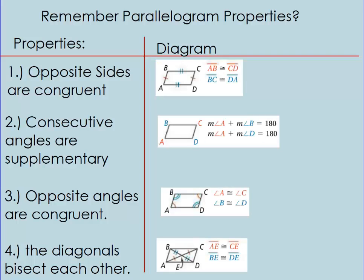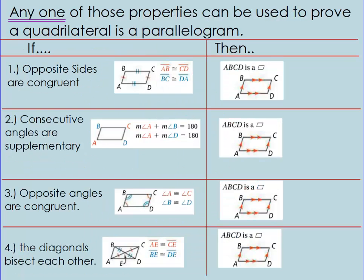You remember these properties from last section 6-2, different properties to identify a parallelogram? We can flip those around and say any one of those properties can be used to prove a quadrilateral is a parallelogram. If the opposite sides are congruent, then it's a parallelogram. If the consecutive angles are supplementary, it's a parallelogram. Same thing with opposite angles and same thing with diagonals. That's all we need to prove a parallelogram.